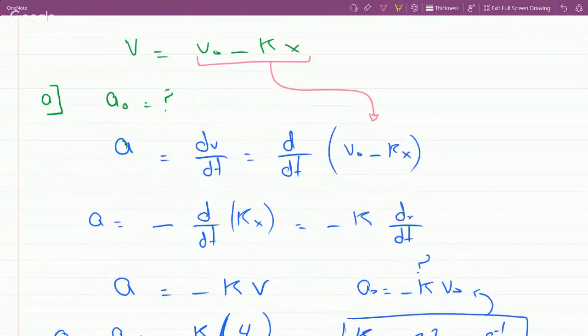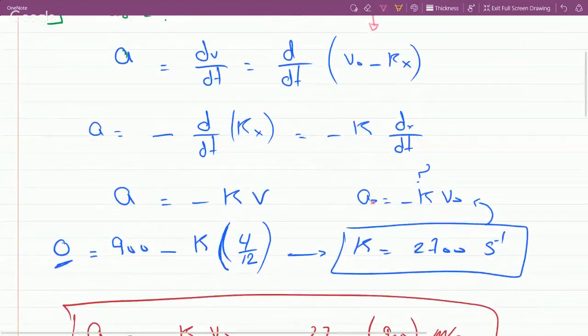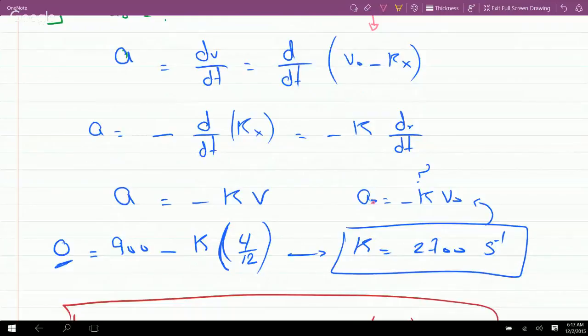v₀ is just a constant so there is no derivative for that. The derivative of the second term is minus d over dt of kx. k is a constant, so dx over dt is just v. If I need the initial acceleration, this will just be a₀ equals minus k v₀.